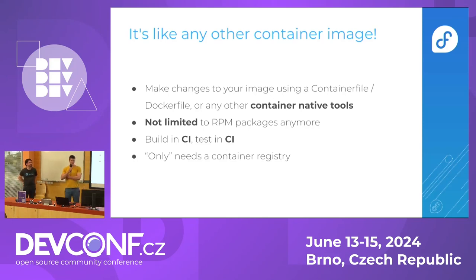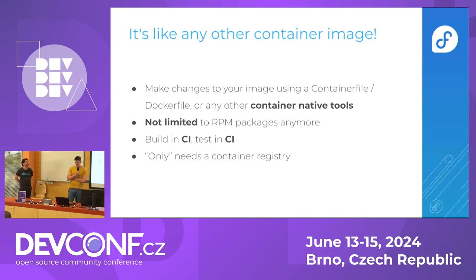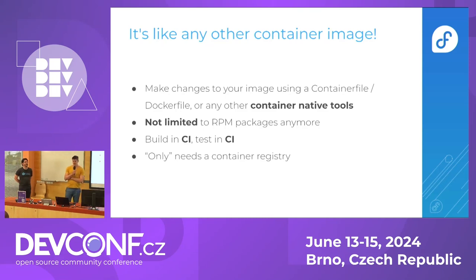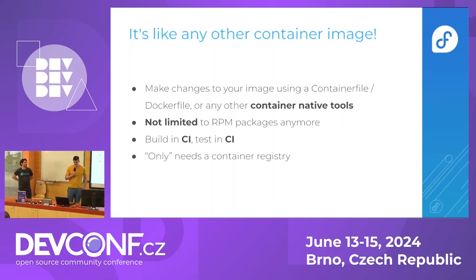What's cool is it's like any other container image. So you can make changes to the image using a container file and use any other container tools that you're used to. And it's not limited to RPM packages — in that container file, you can copy whatever you want, write any file you want. Then you have a nice image that is cloud-native: you can build it in CI, test it in CI, and for deployment you only need a container registry to pull the images from any machines you want.